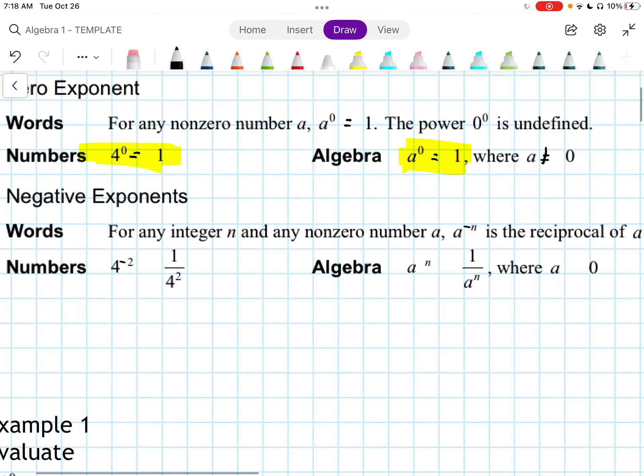If we had 4 to the negative 2, that would be 1 over 4 to the 2, or 4 squared. For algebra, that would be A to the negative n would be equal to 1 over A to the n. And again, we can't have A being 0.